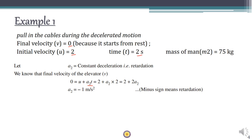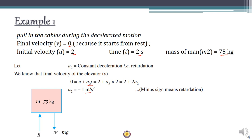We get deceleration A2 equal to minus 1 m/s², which means the direction of acceleration is downward. We also need to find the reaction on the floor when the man of mass 75 kg is standing on the floor of the lift. Let's draw the free body diagram.